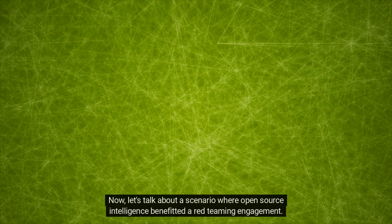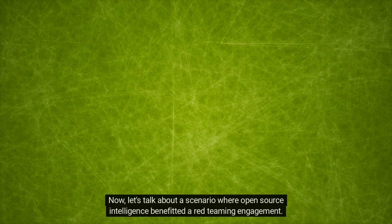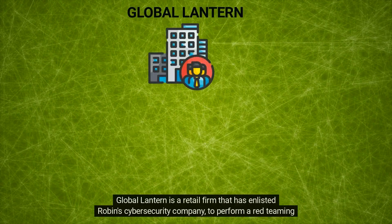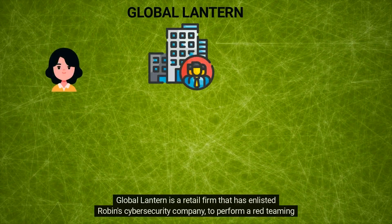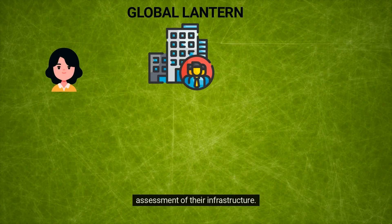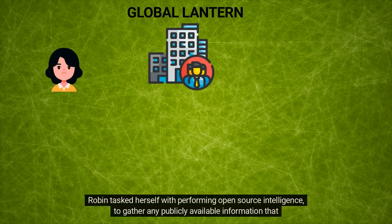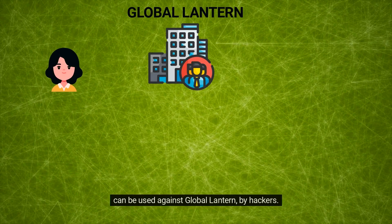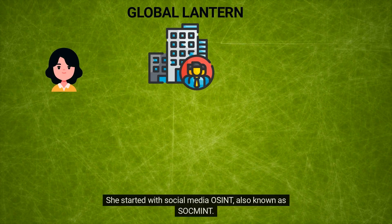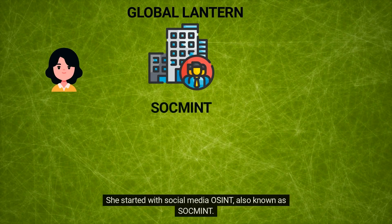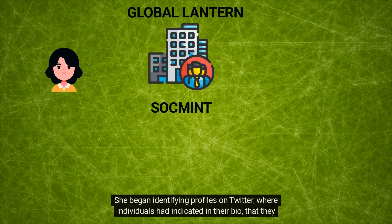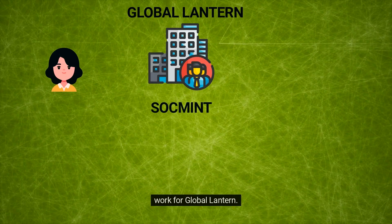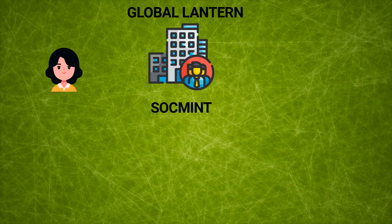Now let's talk about a scenario where open source intelligence benefited a red teaming engagement. Global Lantern is a retail firm that has enlisted Robin's cybersecurity company to perform a red teaming assessment of their infrastructure. Robin tasked herself with performing open source intelligence to gather any publicly available information that can be used against Global Lantern by hackers. She started with social media OSINT, also known as sock-ment. She began identifying profiles on Twitter where individuals had indicated in their bio that they work for Global Lantern. She found about 20 profiles.